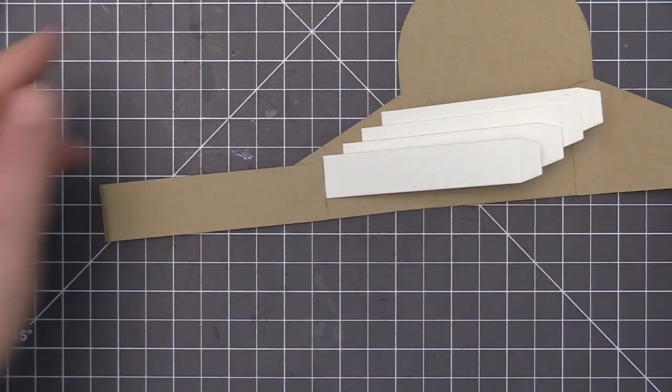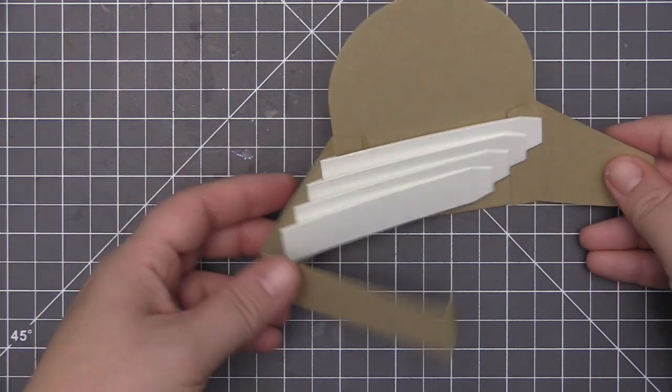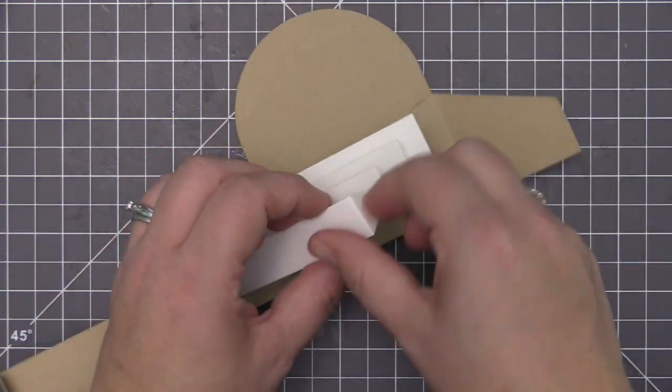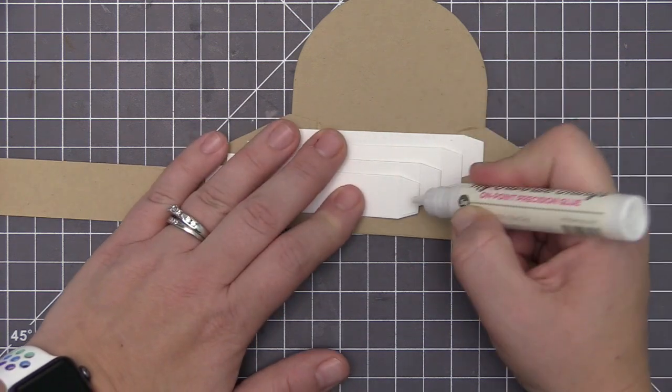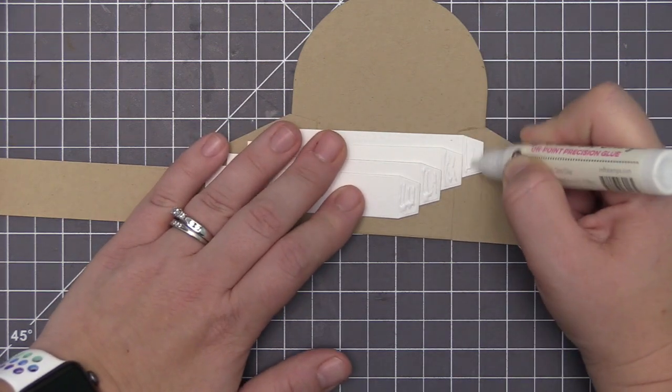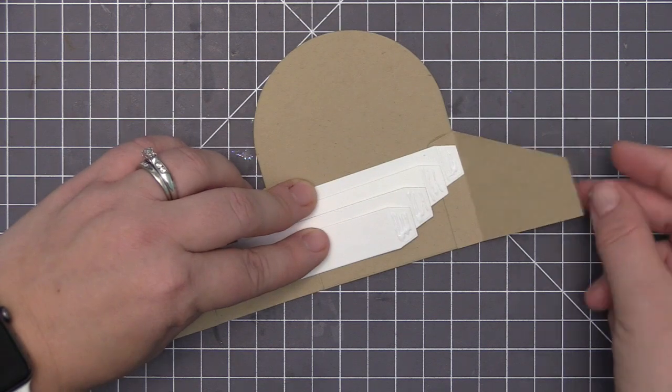I always use the shelf above to make sure that I have the lower one lined up straight. Once I have them all adhered, I'm going to go ahead and add liquid glue to the other end after I've scored all of the end pieces.